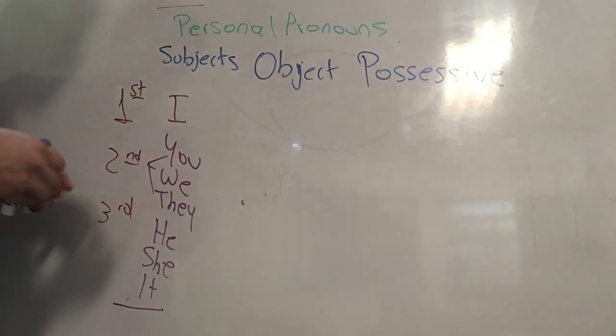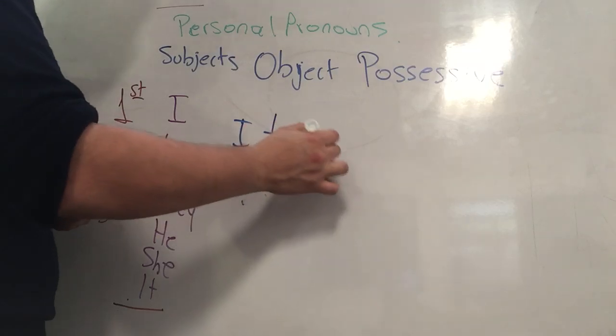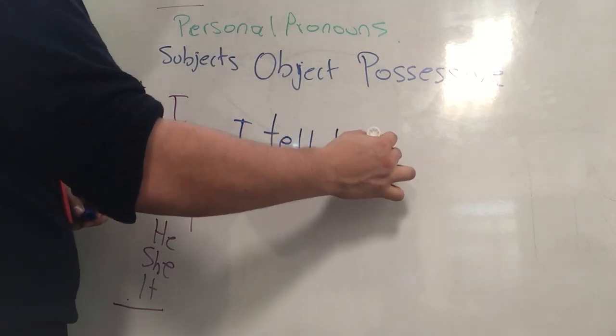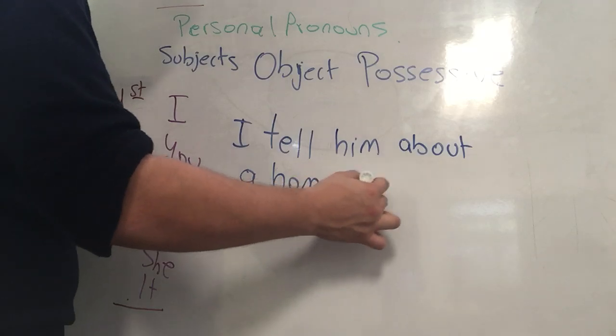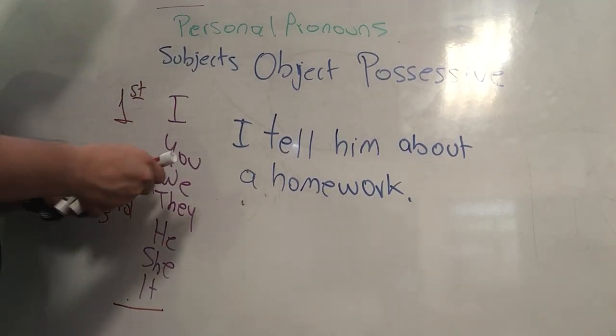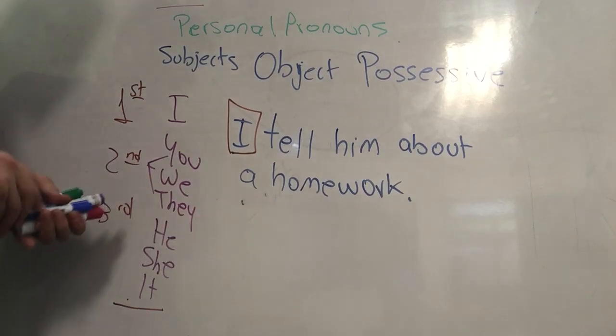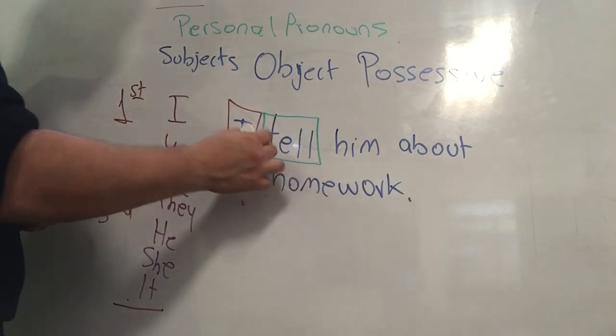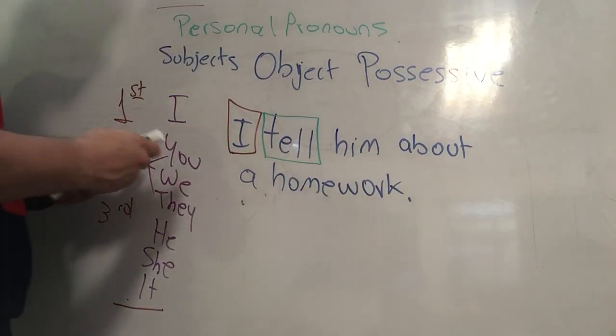What do we mean with the object pronouns? Remember that in a sentence, we have: I tell him about the task, for example, or about the homework. Here, what is the subject? What is the person who developed the action, who does the action? I. That is the subject.